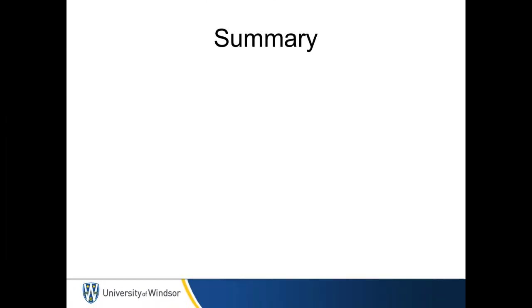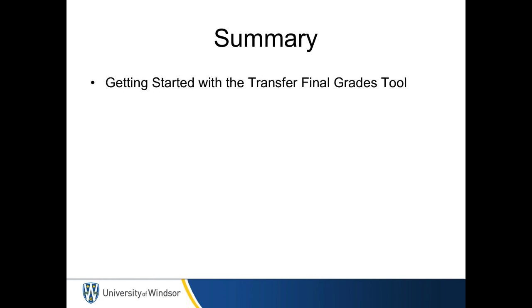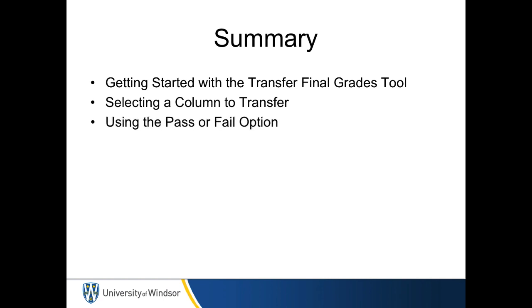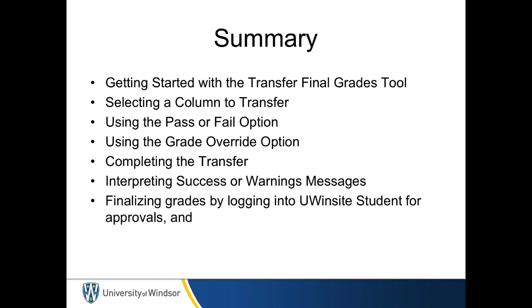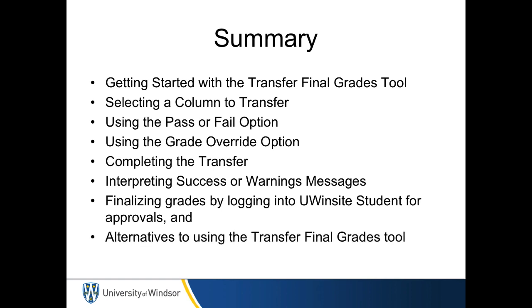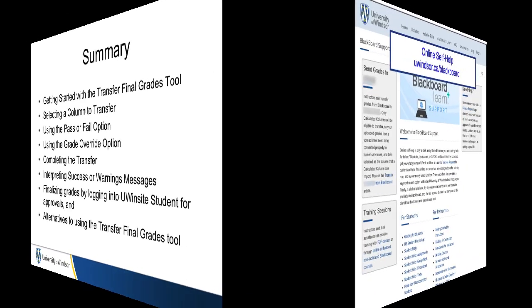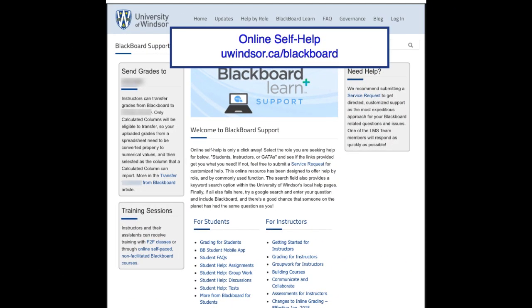In summary, in this video we discussed getting started with the Transfer Final Grades tool, selecting a column to transfer, using the Pass or Fail option, using the Grade Override option, completing the transfer, interpreting success or warning messages, finalizing grades by logging into UWinsight Student for approvals, and alternatives to using the Transfer Final Grades tool. For more information on using Blackboard at the University of Windsor, visit the online self-help pages at uwindsor.ca/blackboard.